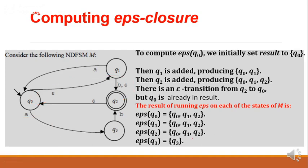First, I will calculate the epsilon closure of Q0. Whenever you are finding the epsilon closure of Q0, first you should include the state itself — add Q0. After that, from Q0 via epsilon transition, you can add which other states. From Q0, taking epsilon transition, you can go to Q1. From Q1 taking epsilon transition, you will come back to Q0. You are not going to repeat states. Q0 has no other epsilon transition path, so epsilon closure of Q0 is Q0 and Q1.